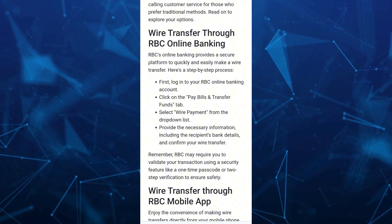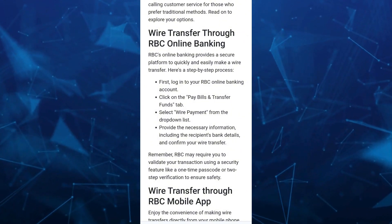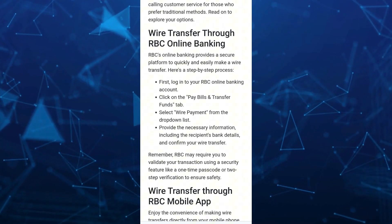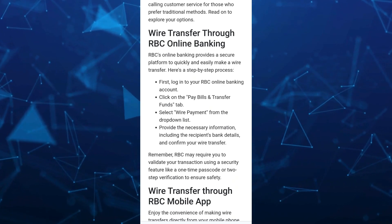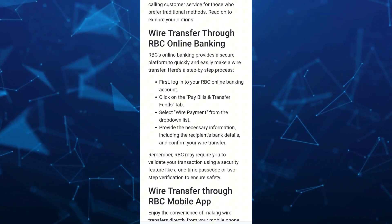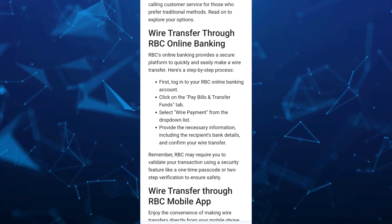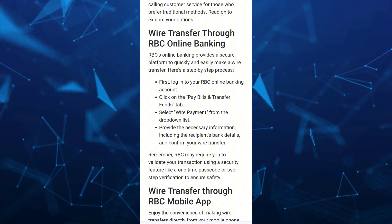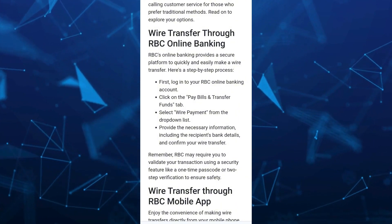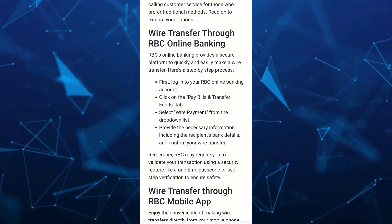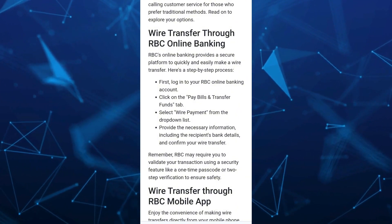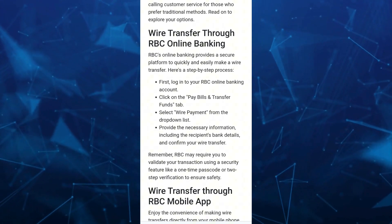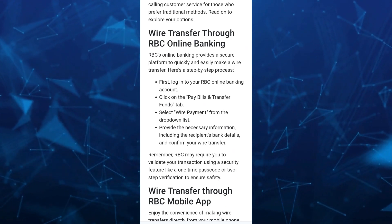First, log into your RBC online banking account, then click on the Pay Bills and Transfer Funds tab, and then select Wire Payment from the drop-down list. Now provide the necessary information including the recipient's bank details and confirm your wire transfer.